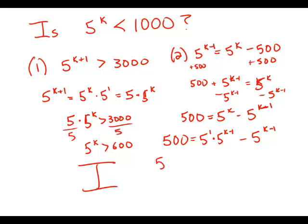And so now what I have is 5 times 5 to the k minus 1, minus 1 times 5 to the k minus 1. So that's 5 minus 1 times 5 to the k minus 1, which is 4 times 5 to the k minus 1. So 500 equals 4 times 5 to the k minus 1.